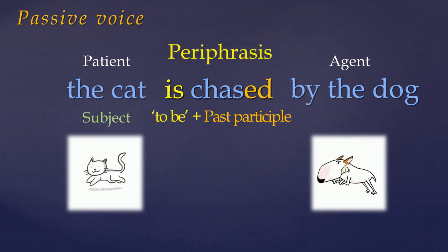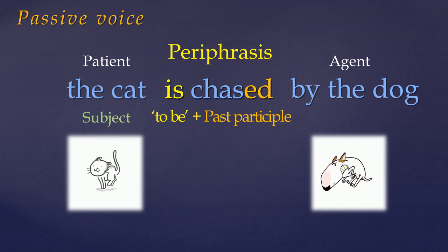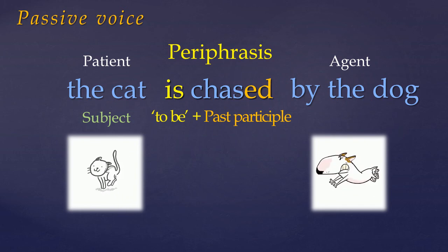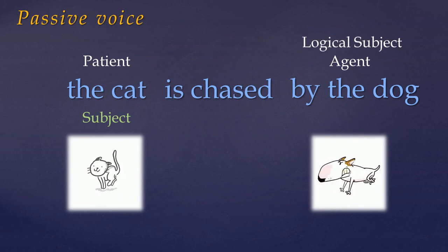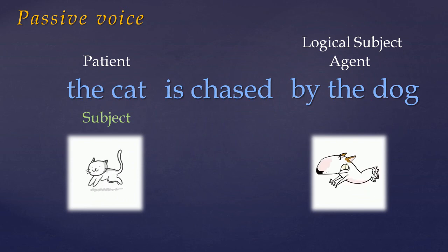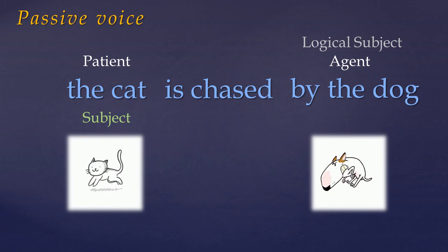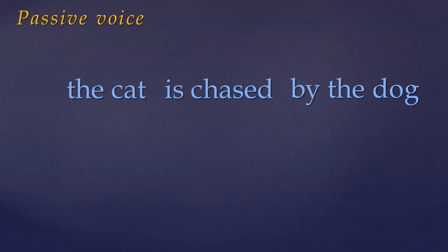In English, the passive voice is always expressed by periphrasis — the combination of the verb 'to be' expressing the tense, and a past participle expressing the action. And one more note: you may also see the agent called the logical subject, as opposed to the grammatical subject, though I find this a bit counter-intuitive. There are more tutorials on this subject, both in English and in Pali, if you want more.